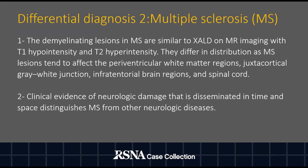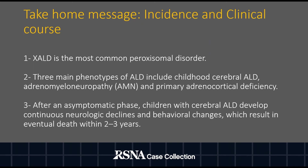The second differential diagnosis is multiple sclerosis. The demyelinating lesions in MS are similar to XALD on MRI with T1 hypointensity and T2 hyperintensity. However, they differ in distribution as MS lesions tend to affect the periventricular white matter regions, juxtacortical gray-white junction, infratentorial regions, and spinal cord. Clinical evidence of neurologic damage disseminated in time and space, a distinguishing feature of MS, is lacking in this case.